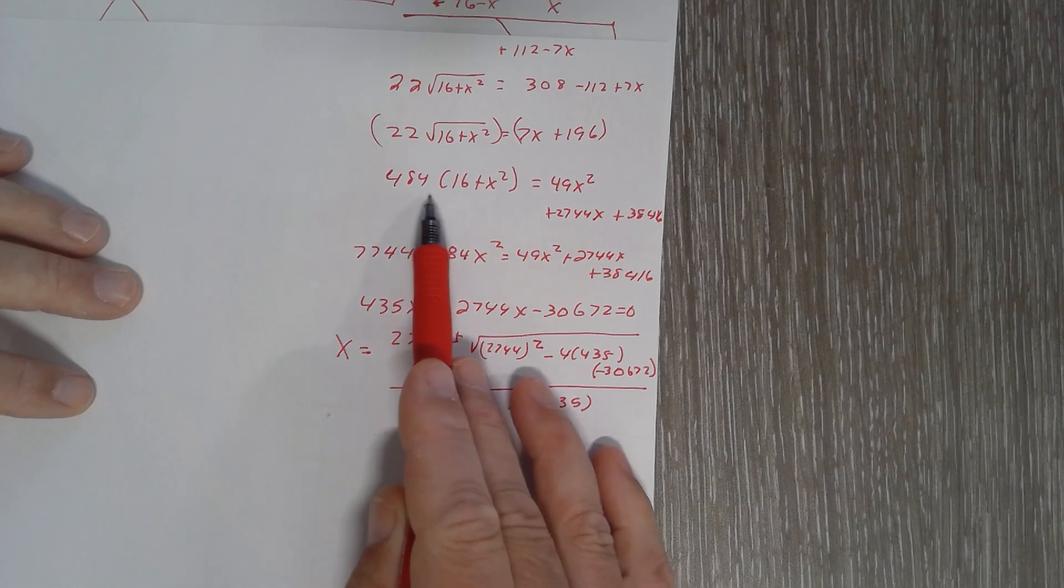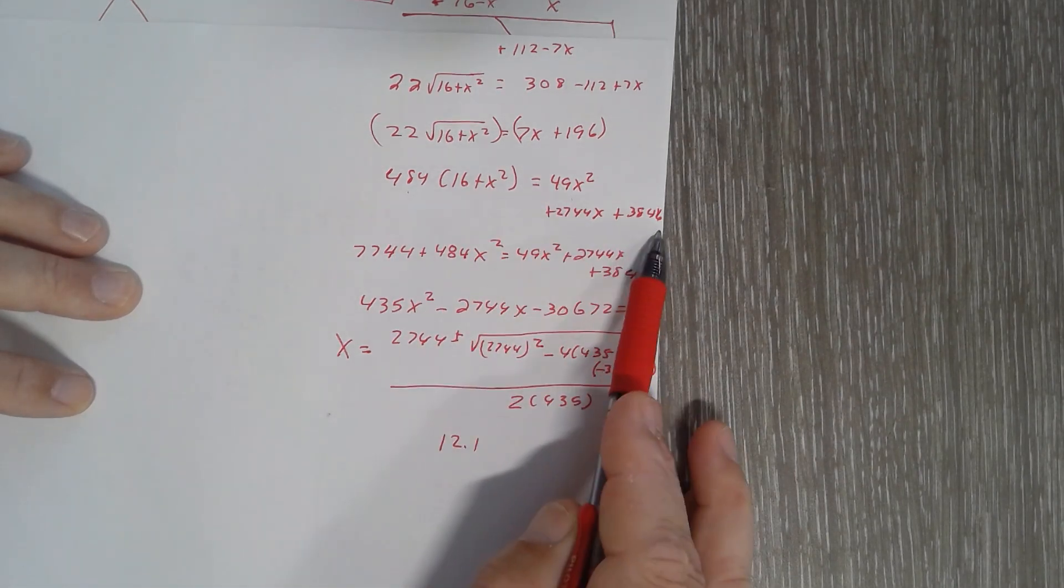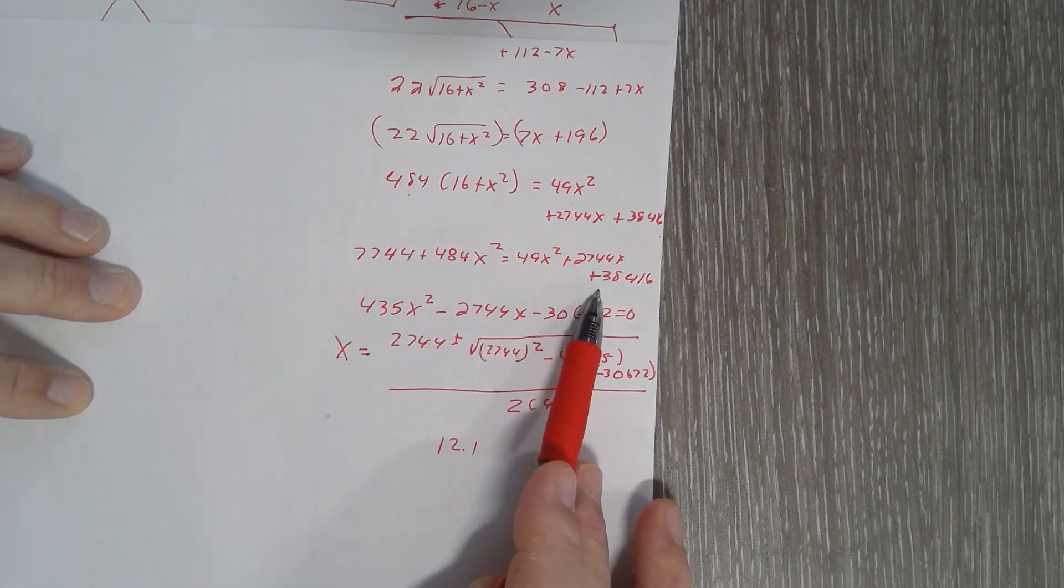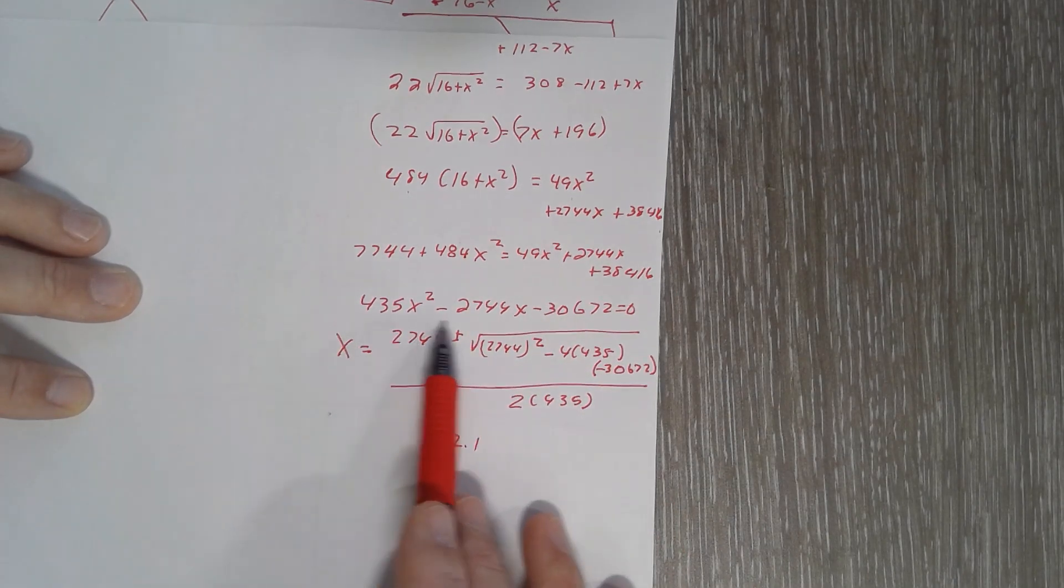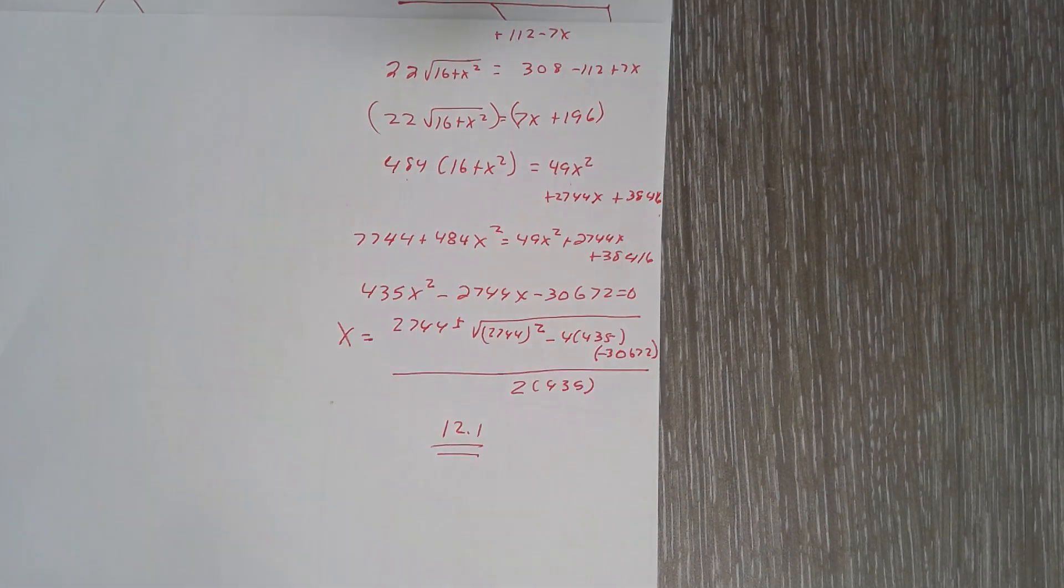Square both sides and you get some really ugly numbers. Simplify it out, you'll end up with your quadratic which you need to put into the quadratic formula, and that will come to the correct answer.